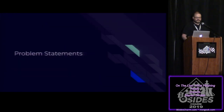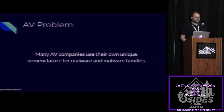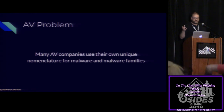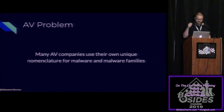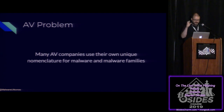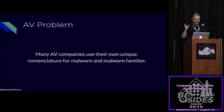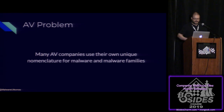I want to focus the talk on a few problem statements. The first is commonly known as the AV problem. Many AV companies have their own unique nomenclature. When you submit a file to an AV scanner or if the scanner finds a file on your machine and detects it, it will return a result as to what it thinks that file is. That result varies across different scanner engines and within one particular scanner. This presents a problem for using that data. Even though it's very low quality data, I'll show you a few techniques for squeezing a little bit of value out of it.